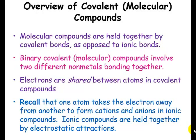Everything we've been discussing up to now has been ionic bonds. Now we're going to talk about covalent bonds. The way that you can identify a covalent compound or a molecular compound is if you see nonmetals bonded together — no metals will be present, and it will not start with H, so it's not an acid. We want to look for nonmetals bonded together. Binary covalent just means two different types of nonmetals bonded together.